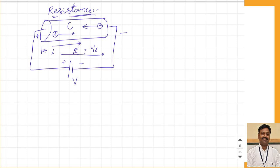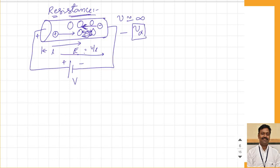Whenever an electron is trying to move, there are many atoms in the material, so the electron will collide with an atom. When it collides it bounces back, then again because of the force it tries to move forward, collides again, and moves like this. As a result, the velocity is not infinite — it will be the mean value due to collisions, which we call the drift velocity.